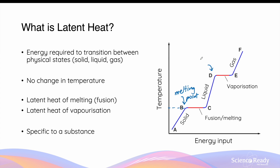At point C, once all of the substance has been converted into liquid state, further energy input results in a further increase in temperature until it gets to point D, which is the boiling point. At this point, further energy input is used to transition the substance from liquid into gaseous state, and again there is no change in temperature during this transition.